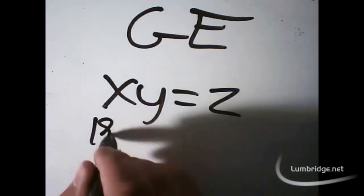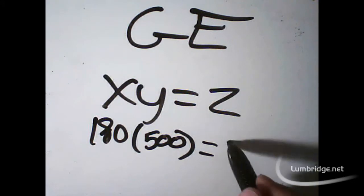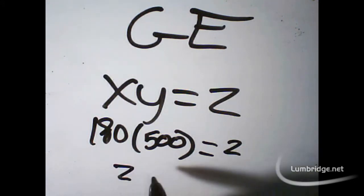Say you want to buy bowstrings. Those are about 180 gold apiece, right? Say you want to buy 500 of them. Then we're solving for z. So 180 times 500 is equal to 90k.